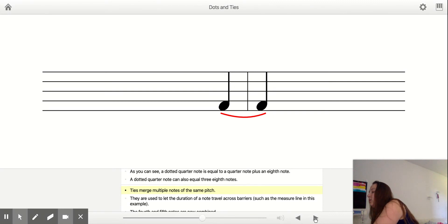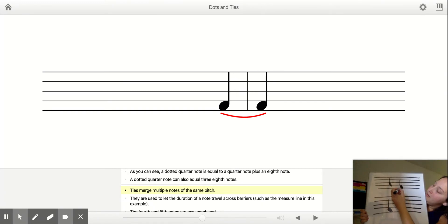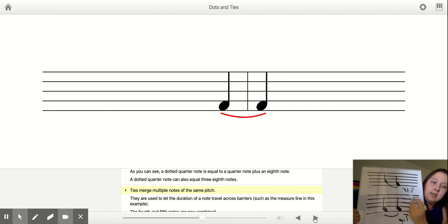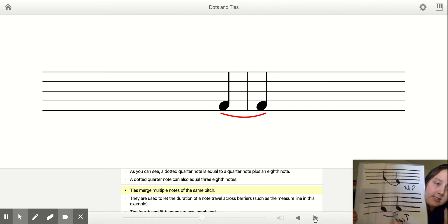So this one right here is a slur and this one right here is a tie. The reason we know that is because a slur is on two different notes and a tie is on the same note.